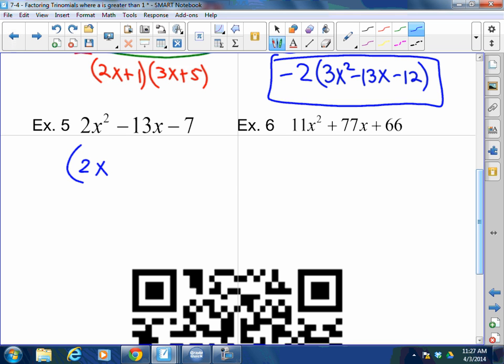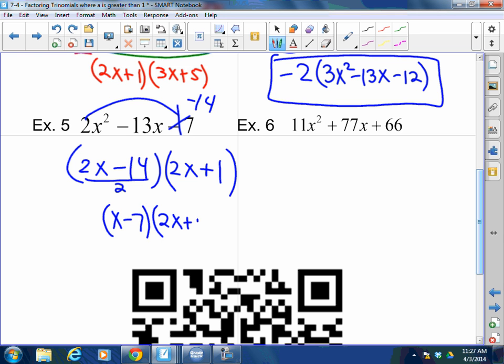So let's get to it. 2x, 2x. New c is -14. What times what is -14, but when added together is -13? -14 and positive 1. Great. Can I imaginary factor from here? Yes, a 2. So I'm going to be left with (x - 7)(2x + 1).